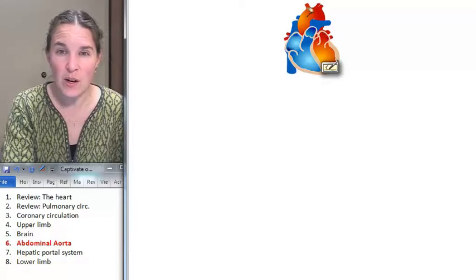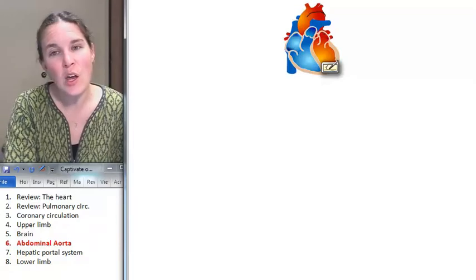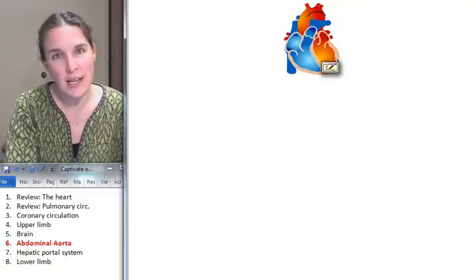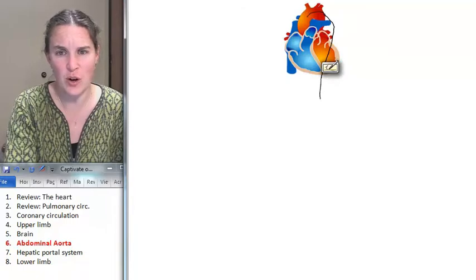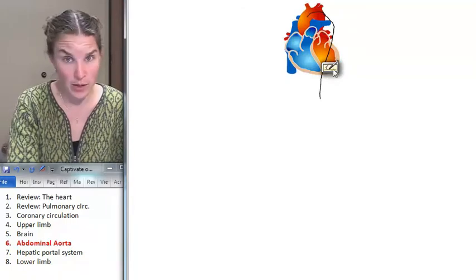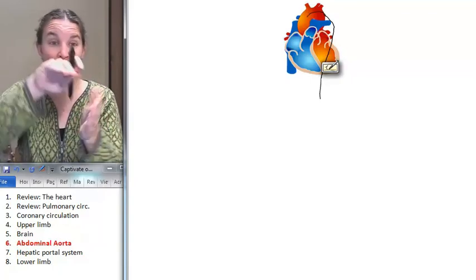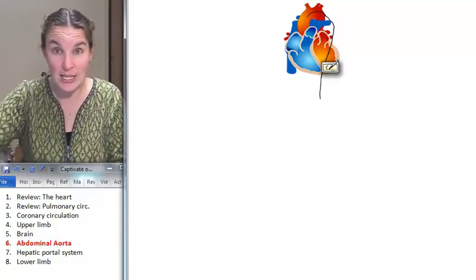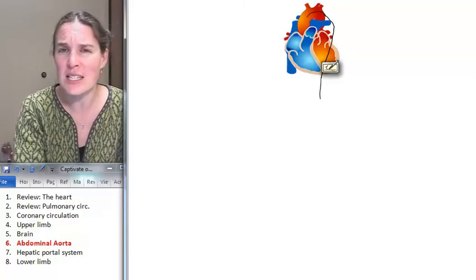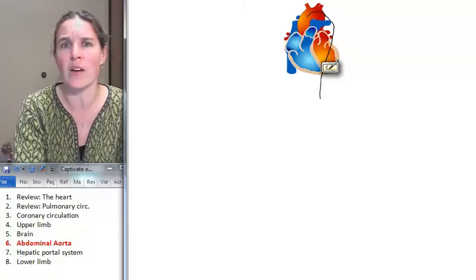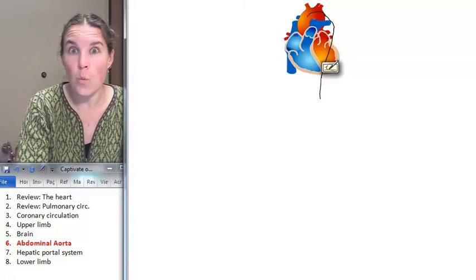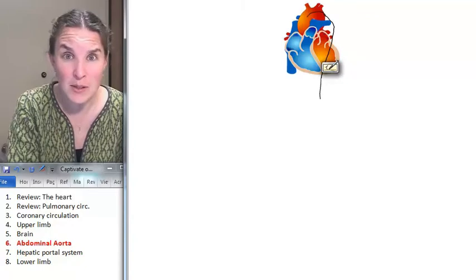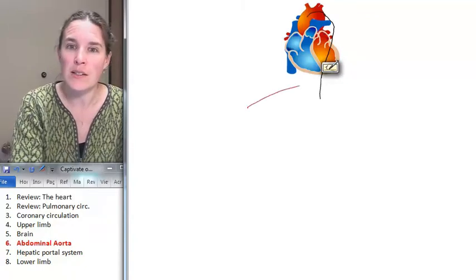We have to get through the aortic arch, and then we actually have to descend. The first part is the descending thoracic aorta. Forgive the fact that I'm just drawing the descending thoracic aorta right through the middle of my heart. But you can imagine that my arch turns into the descending thoracic aorta. How long is it considered the thoracic aorta? As long as it's in the thoracic cavity. And what separates the thoracic cavity and the abdominal cavity? The diaphragm.